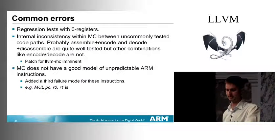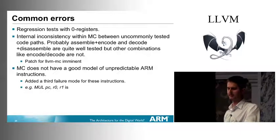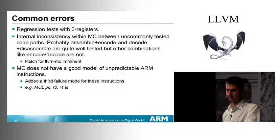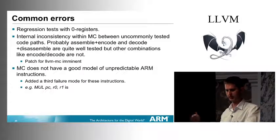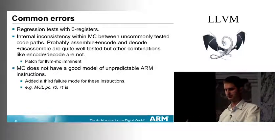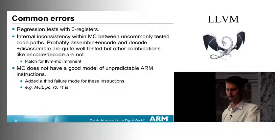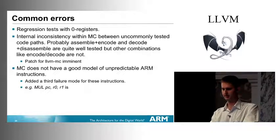Most bugs we're seeing are because of that internal consistency issue. The likely reason is that the llvm-mc tool — the sandbox tool for testing MC in isolation — doesn't have options for all four combinations of transformations. You can disassemble, but you can't then see what the encoding is, so you can't do the encode-decode loop. There's a patch for that which has been waiting for code review for some time.